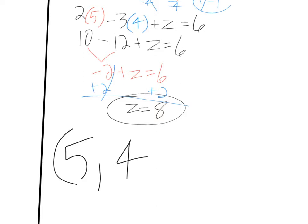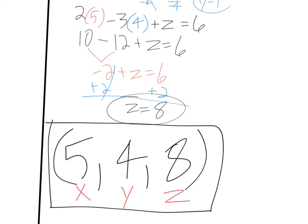So you write it as an ordered triple. Five comma four comma eight. Ordered pair goes x comma y, and ordered triple goes x comma y comma z. And that's it for number one.